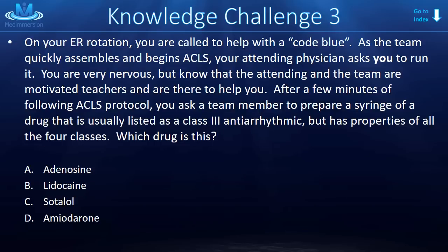Knowledge challenge number 3: on your ER rotation, you're called to help with a code blue. As the team assembles and begins ACLS, your attending asks you — yes, you, the medical student — to run the code. After a few minutes of following ACLS protocol, you ask a team member to prepare a syringe of a drug that is usually listed as a class 3 antiarrhythmic but has properties of all four classes. Which drug is this? The answer is amiodarone. Great drug — you've got to know it. High yield. You are going to use or talk about this drug on your rotations.